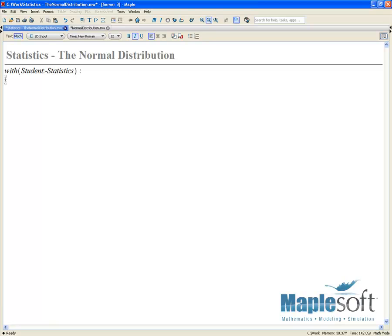With the Student Statistics package in Maple, we can generate a new random variable based on a normal distribution using the normal random variable command.